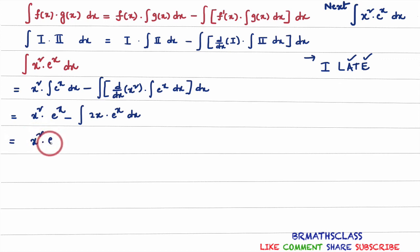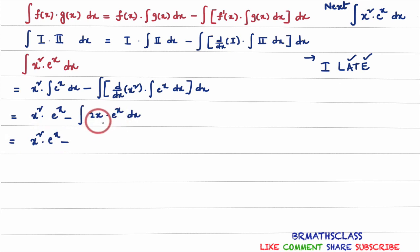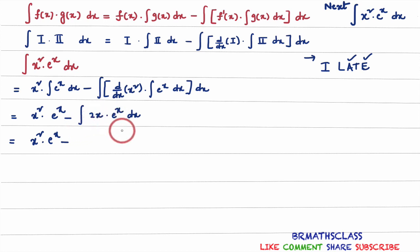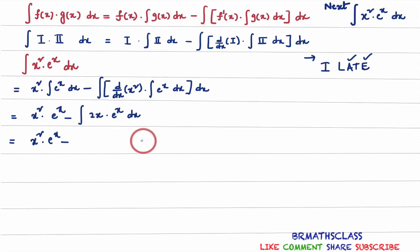We see x squared into e power x minus... how to integrate this part? Here, again, product of two functions is there. Integral of product of two functions means again we need to use the integration by parts formula. That means in this problem, we need to use integration by parts formula twice. So I will apply the integration by parts formula again.